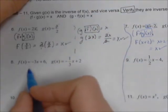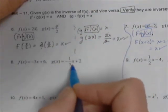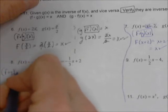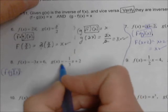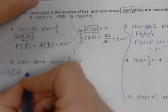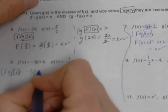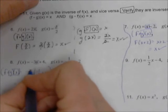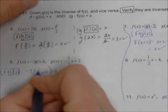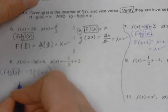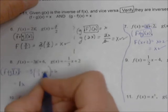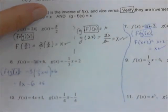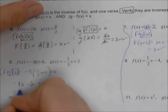For number 8, f(x) = negative 3x plus 6, and the inverse is g(x) = negative one-third x plus 2. Let's prove this with f of g of x. We replace the x in f with negative one-third x plus 2, giving negative 3 times (negative one-third x plus 2) plus 6. Distributing: negative 3 times negative one-third is positive 1, giving 1x; negative 3 times 2 is negative 6. So we have x minus 6 plus 6, which is x. That's the first half.